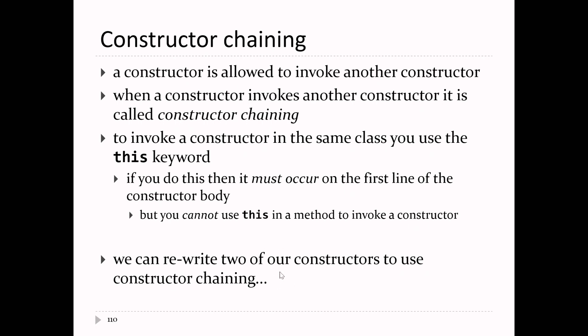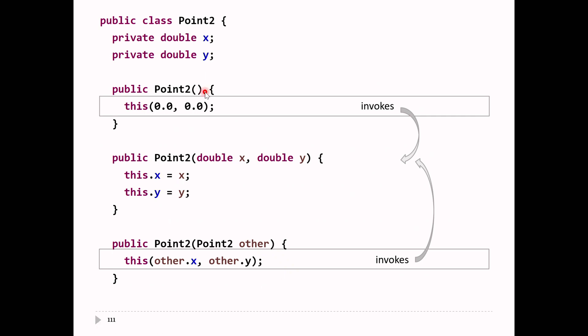That lets us rewrite our no-argument constructor and the copy constructor using constructor chaining. Instead of this.x = 0 and this.y = 0, we can write this(0, 0) — that causes the second constructor to run, setting x and y to zero. In the copy constructor, we write this(other.x, other.y) — that causes the second constructor to run, setting this.x to other.x and this.y to other.y.